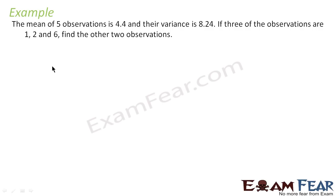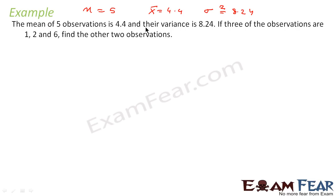We are told that the mean of 5 observations is 4.4 — that is n=5, mean=4.4, and variance=8.24. Three of these observations are 1, 2, and 6, and we need to find the other two observations. Let the two observations be x and y, so the total set is {1, 2, 6, x, y}, where n=5, mean=4.4, and variance=8.24.